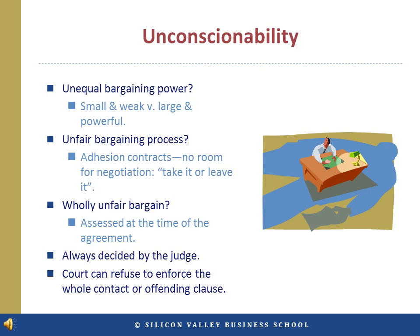Procedural issues that a court could consider include a party's lack of choice, superior bargaining position or knowledge, and other circumstances surrounding the bargaining process. The question of unconscionability is decided by the judge, not the jury, and is assessed at the time the contract was formed, not with the benefit of hindsight. Upon finding unconscionability, a court has a great deal of flexibility on remedies. It may refuse to enforce the contract, refuse to enforce the offending clause, or take other measures it deems necessary to have a fair outcome. Damages are usually not awarded.